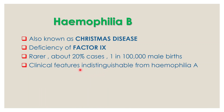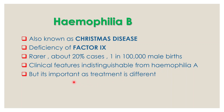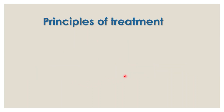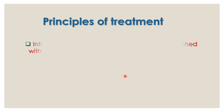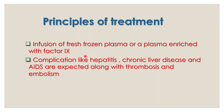The clinical features of Haemophilia B are not very different from Haemophilia A, but it is very important to differentiate them as the treatment is different. The treatment involves infusion of fresh frozen plasma or plasma enriched with Factor IX. However, complications are also very high, including hepatitis, chronic liver disease, AIDS, and thrombosis and embolism if treated for a long time.